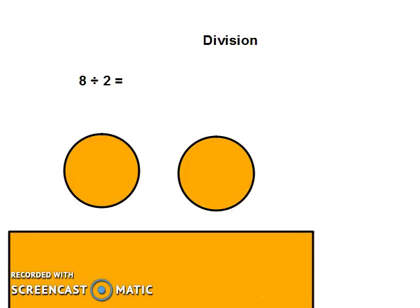So a visual way to work this question out would be to create 2 groups and separate the 8 dots into the 2 groups. So we'd have 1, 2, 3, 4, 5, 6, 7, 8. We've got 4 in each group, so that would mean our answer would be 8 divided by 2 equals 4.